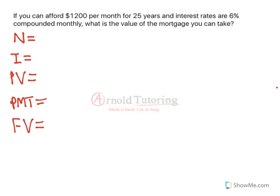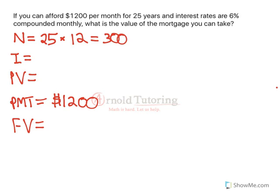Let's walk through the question. You can afford $1,200 per month — that's going to be our payment. And we know that's per month for 25 years, so N, the number of payments, will be 25 years times 12 months per year, which equals 300. We've already got two of the five inputs to put right into our calculator.